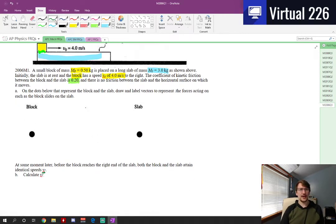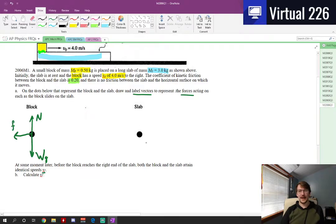In Part A we are asked to identify the vectors and label them of the forces that are acting on each of the block and the slab respectively. When we look at the block it has a weight acting on it due to gravity. It has a normal force equal to that weight and as it's trying to move to the right the friction between them is going to push backwards or to the left on this block. When we look at the slab it also has its own weight due to gravity but it also has the weight of the block pushing down on it.